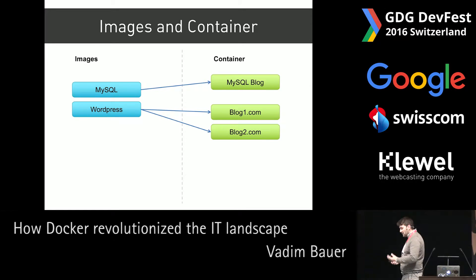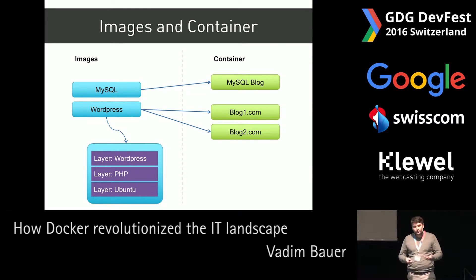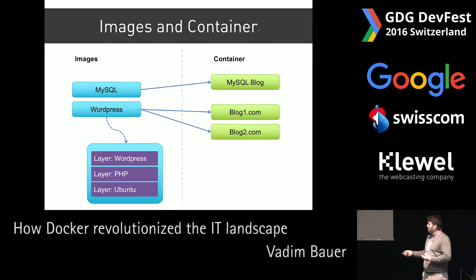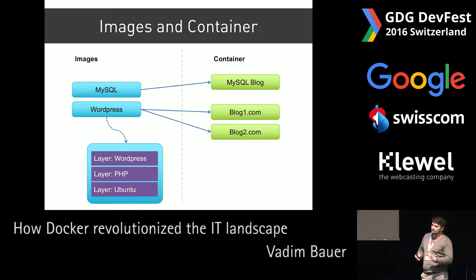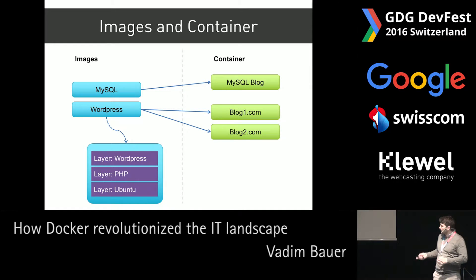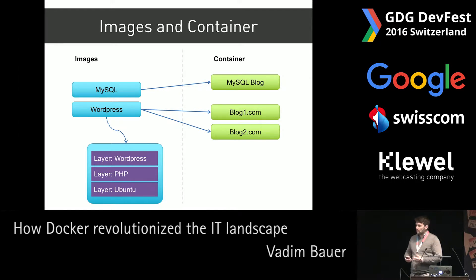Each image itself consists of multiple layers, and those layers can be stacked on top of each other. If you take a look at a WordPress image, it's not just the WordPress image itself — it contains underneath a PHP layer that provides your PHP runtime environment, and underneath that it contains a stripped-down Linux operating system, in this case Ubuntu. This is how you build your applications: layer by layer, images that extend other images, creating more and more complicated solutions.